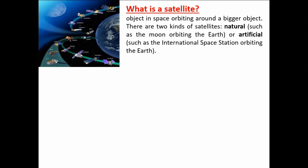Other planets also have their own individual moons that move around the planet — those are also natural satellites. Then we have artificial satellites. Taking Earth as an example, we have a lot of satellites in motion orbiting the Earth, used primarily for remote sensing, communication, navigation, military purposes, and so on.